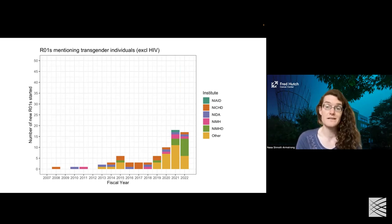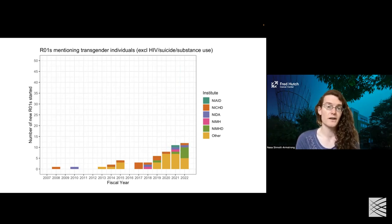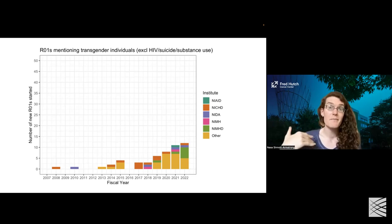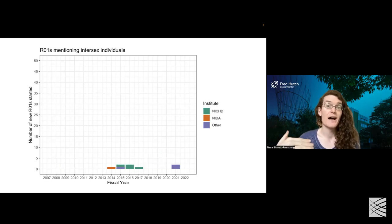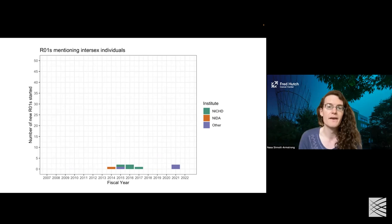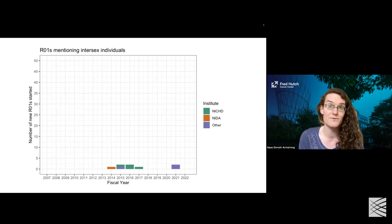If we remove HIV and also remove suicide-related and substance use-related work, what we end up with is fewer than 15 studies a year — even in 2022 — being funded to look at transgender individuals. But if we consider this in the context of other identities in the SGM community, that's actually comparatively good. For intersex individuals, fewer than 10 R01s have ever been funded by the NIH that even mentioned the word 'intersex.' This is extremely depressing and tells us that without money to look at this work, nobody's doing it.